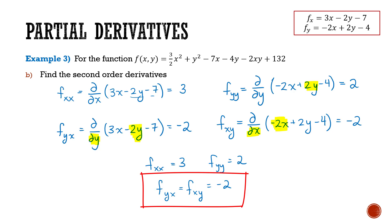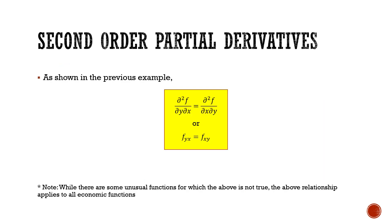This result — that fyx equals fxy — is not just coincidence. This will always be the case: the second order derivative of a function with respect to both y and x will be the same regardless of the order in which you do the derivatives. So fyx will always equal fxy, meaning you only need to compute them once. That's it for second order partial derivatives — try doing this in the next knowledge check.